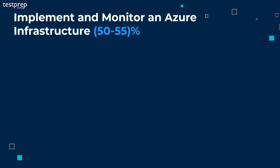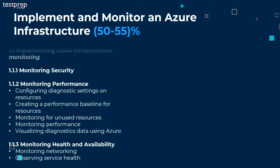Domain one: implement and monitor an Azure infrastructure, comprising 50 to 55% weightage. We can discuss this in seven parts. First, implementing cloud infrastructure monitoring, divided into eight sub-parts. Number one, monitoring security. Number two, monitoring performance, further divided into five parts: configuring diagnostic settings on resources, creating a performance baseline for resources, monitoring for unused resources, monitoring performance, and visualizing diagnostics data using Azure.